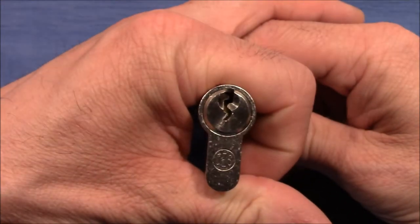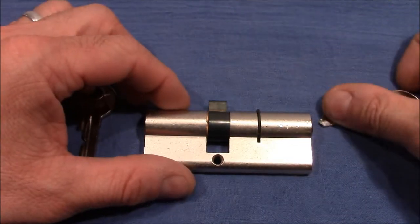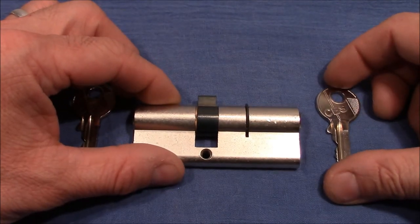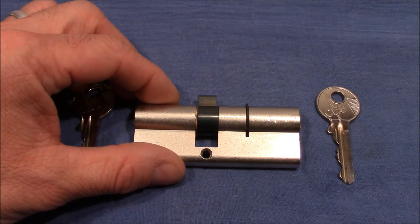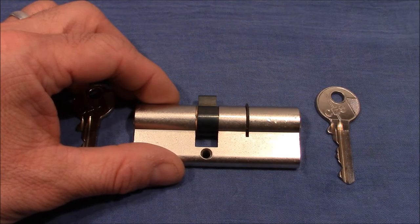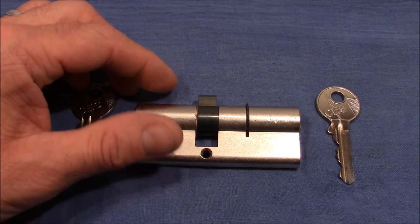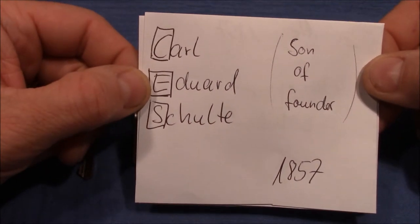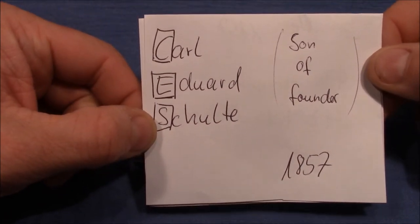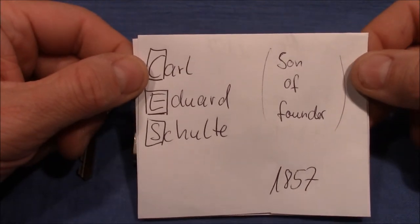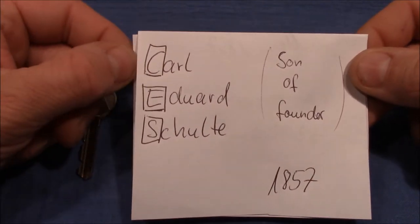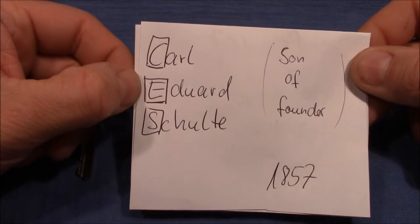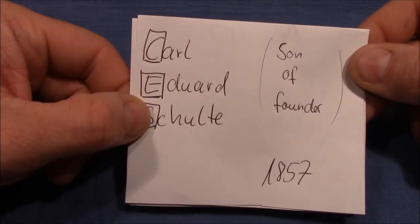CES is a German lock company that was founded in 1840 and the son of the founder took over the company in 1857 and his name was Carl Eduard Schulte. That's how the name of the company comes from the initials CES from Carl Eduard Schulte.